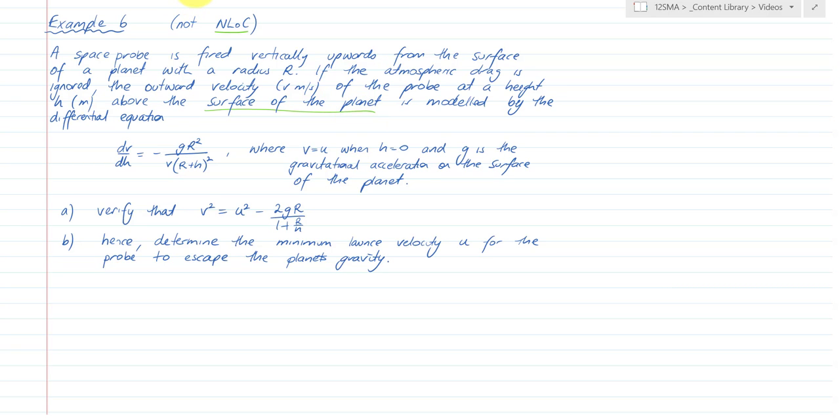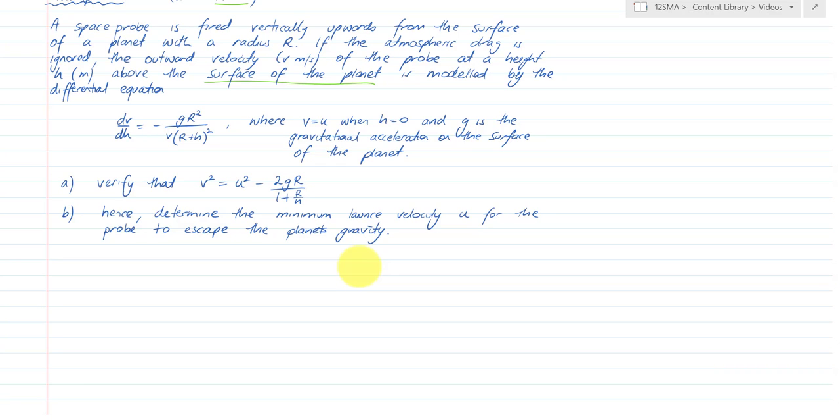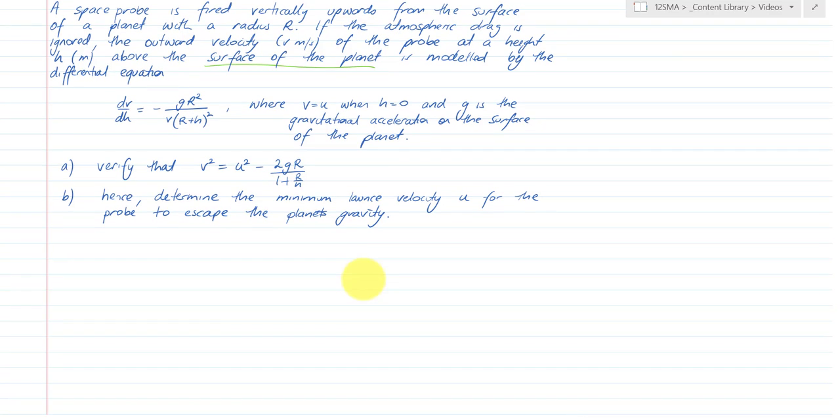First, part A, verify that v squared equals u squared minus 2gr over 1 plus r over h suits this. So we're verifying that that is true based on this differential equation. Now it's a pretty tough differential equation to solve. So when it says verify it means we can actually show that this differential equation comes from that. I want to make the point that u, r and g are all constants, known or unknown.